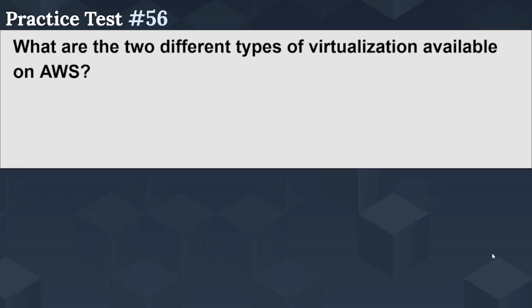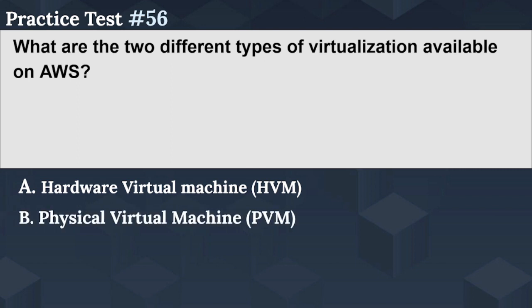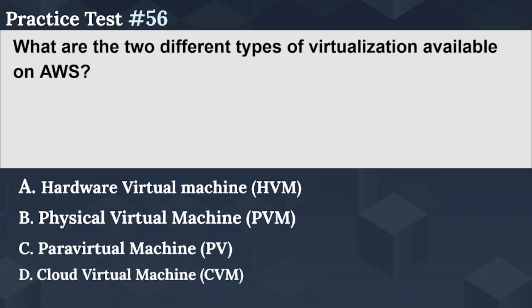The next question is: what are the two different types of virtualization available on AWS? Option A: hardware virtual machine (HVM). Option B: physical virtual machine (PVM). Option C: para virtual machine (PVM). Option D: cloud virtual machine (CVM). Please select your answer in the next 5 seconds.